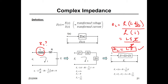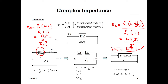What about R? Same thing for R. Z for R is going to be the Laplace transform of V = R·I over the Laplace transform of I. That gives R·I over I — they cancel — and it's simply R. So the complex impedance for any resistor is just the resistance constant.